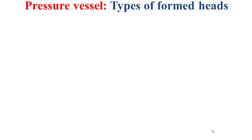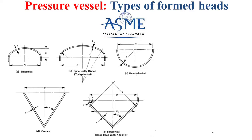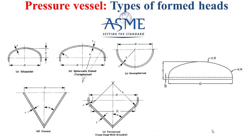First, it's worth noting that there are several types of formed heads based on the ASME standards. As depicted by this figure, we have the ellipsoidal head, the spherically dished head also called the tory-spherical head, the hemispherical formed head, the conical formed head, and the tory-conical formed head.